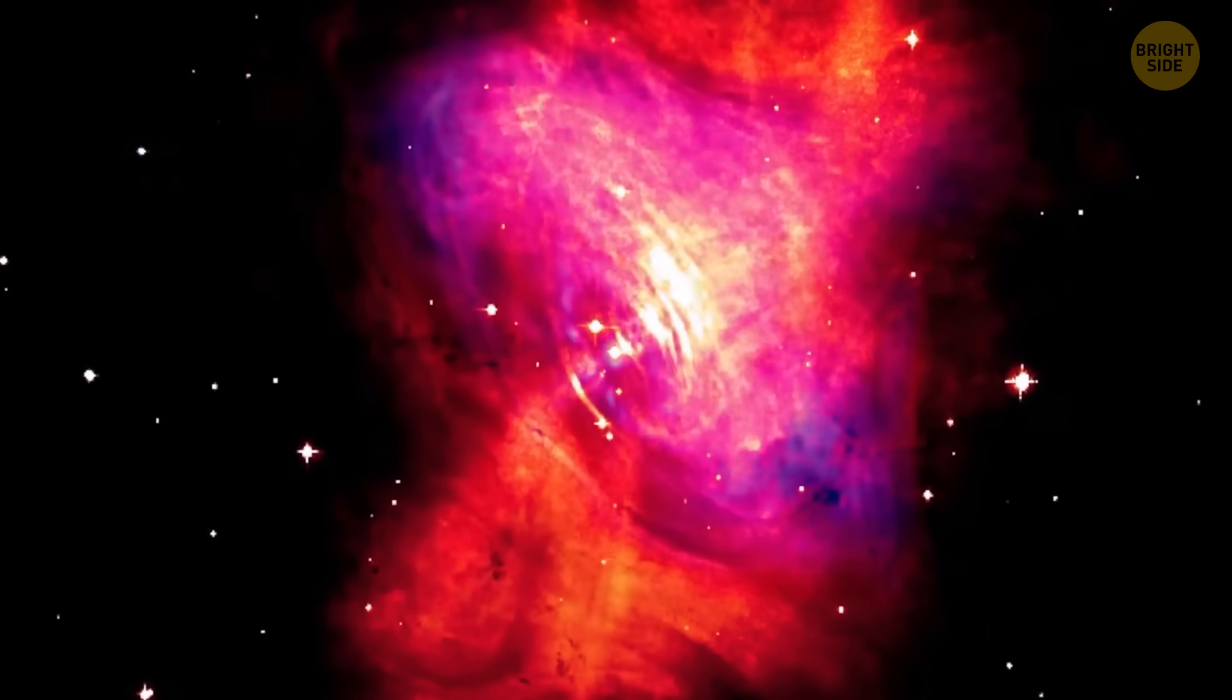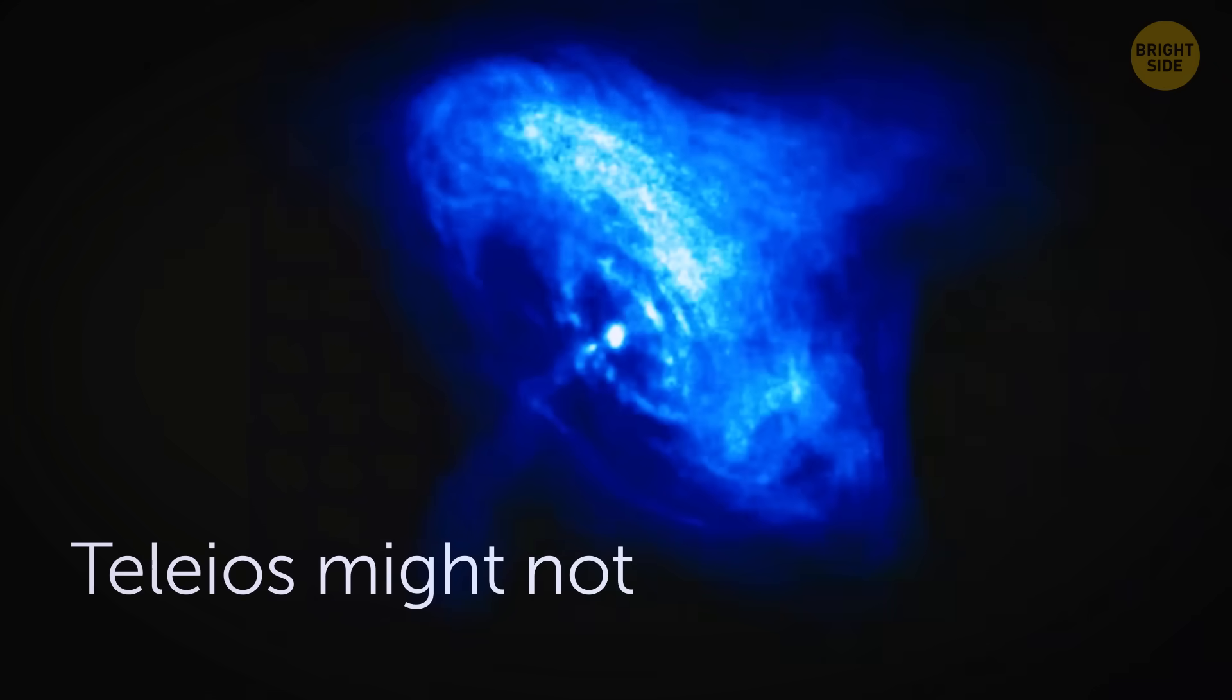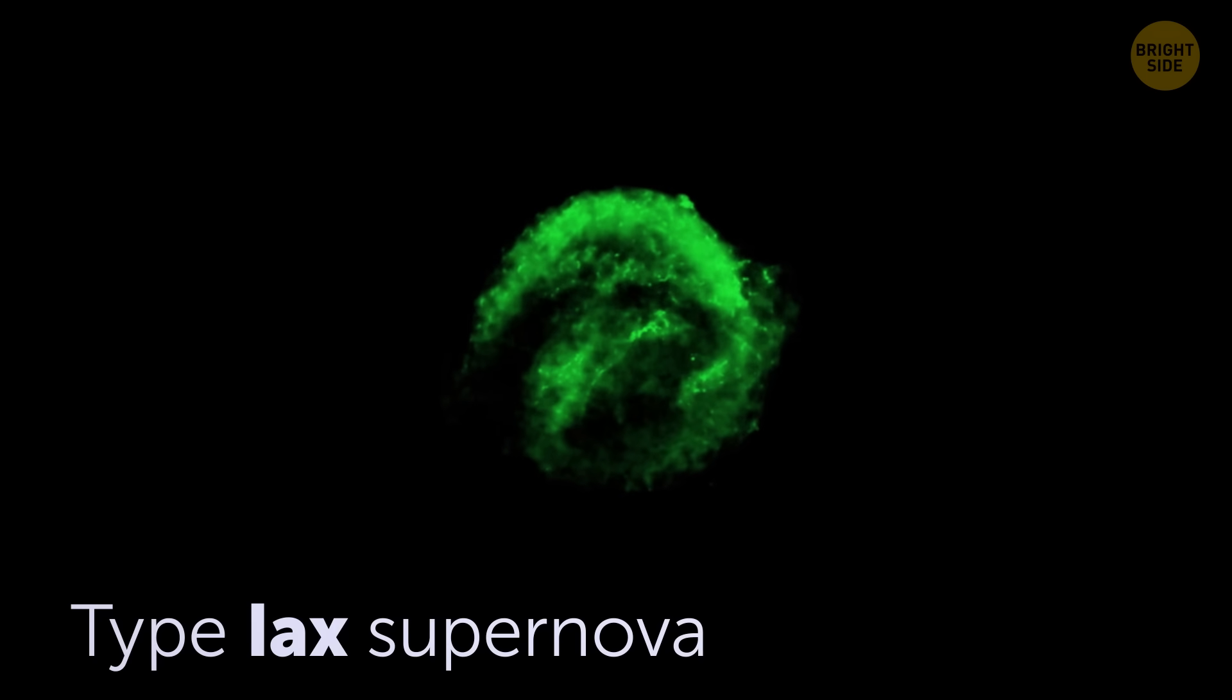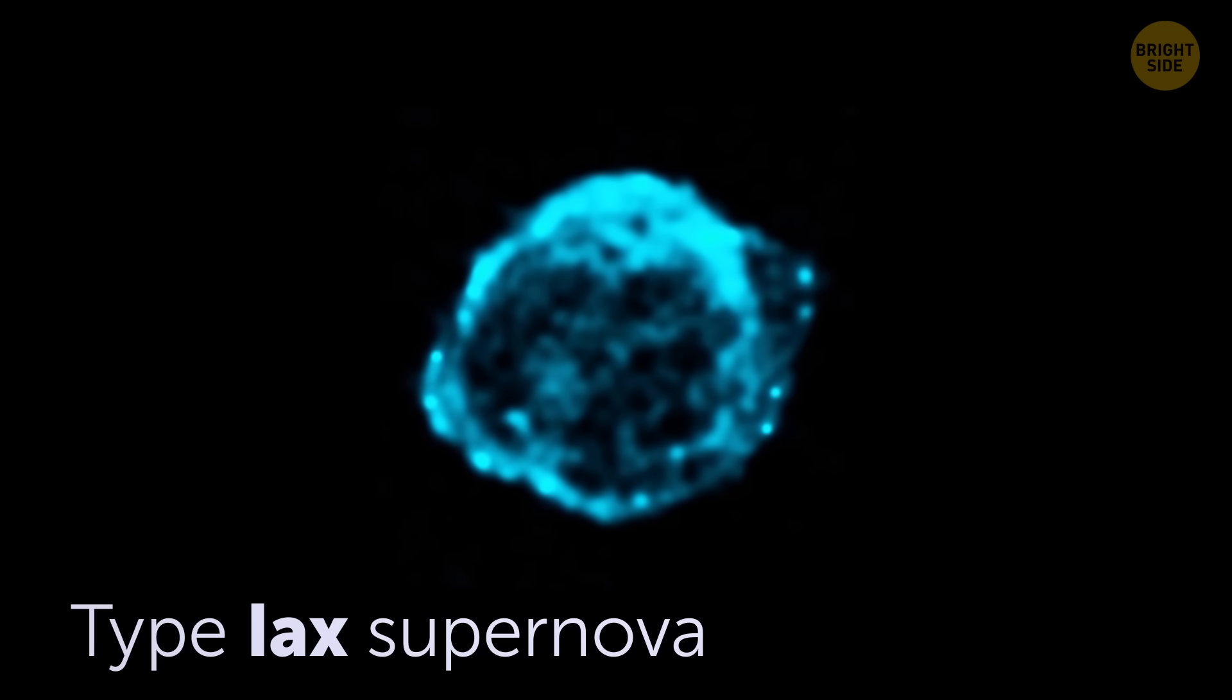Another idea the scientists are considering is that Teleos might not be a regular supernova remnant at all. Instead, it might be the leftovers from a rarer kind of explosion called a type Iax supernova. And this one? It's extra weird.